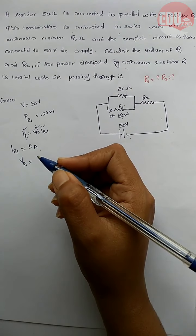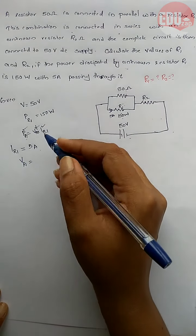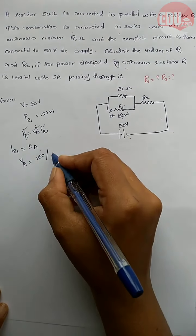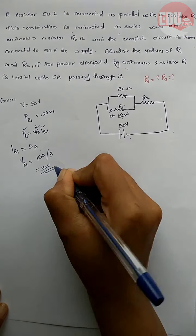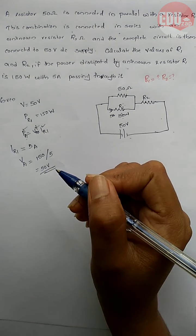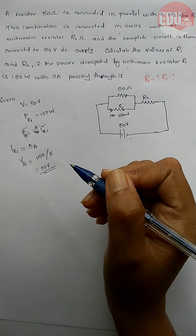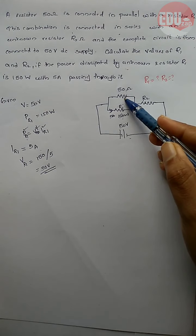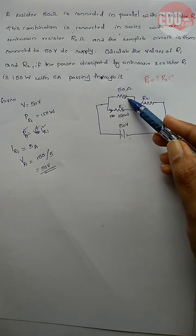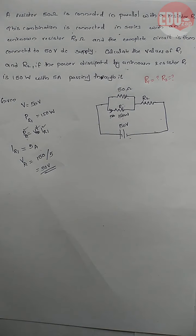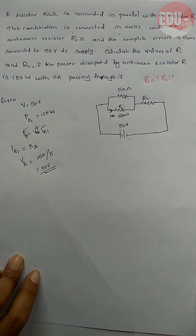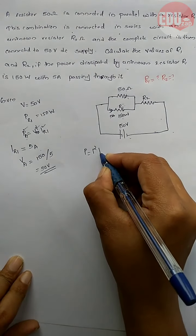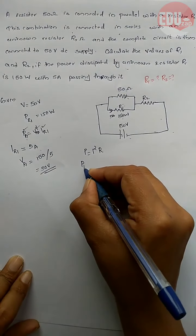What is the voltage across resistance R1? That is P divided by I, which is 150 divided by 5 — so the voltage across resistance R1 is 30 volt.